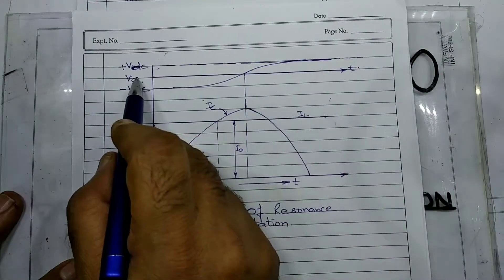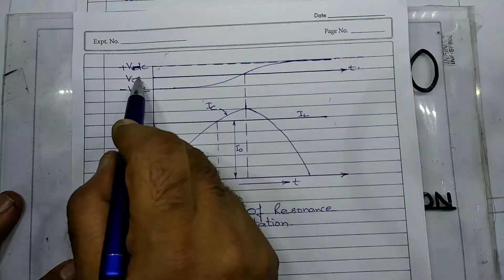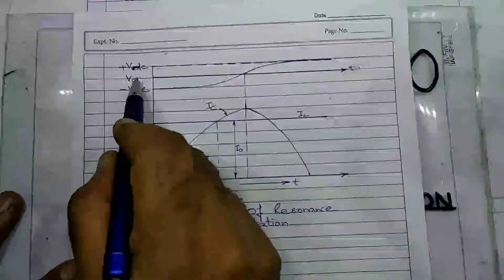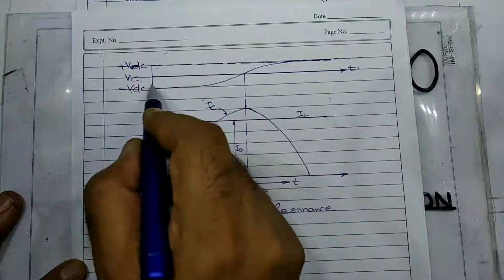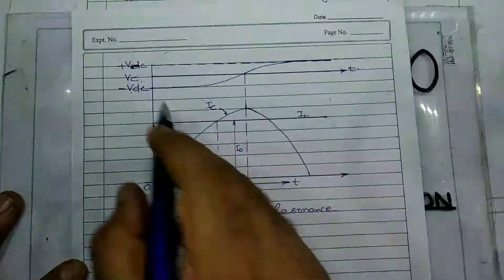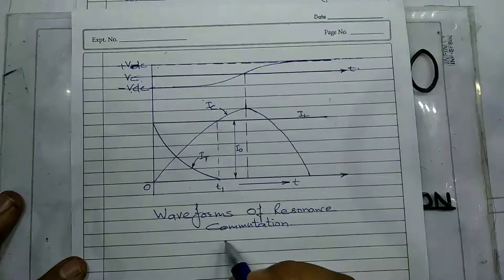This one is the capacitor voltage VC. The voltage across the capacitor is equal to minus VDC. It is charged externally.